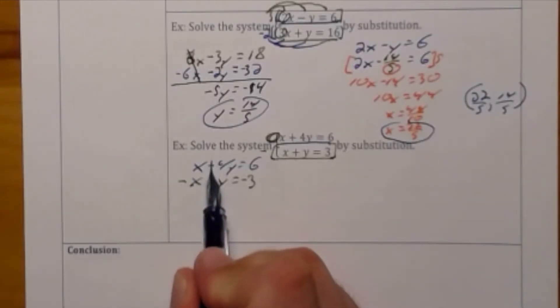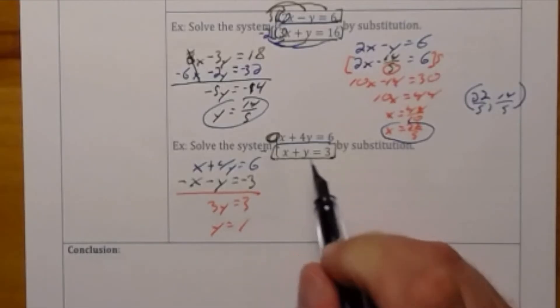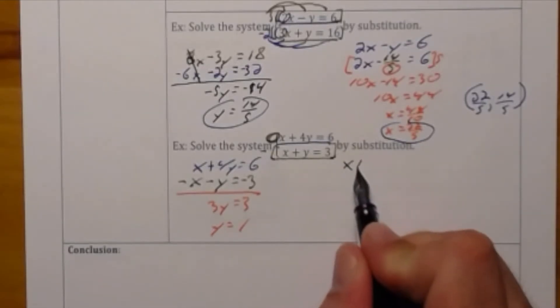My step 4 says I'm going to add both equations together and I'm going to get 3y is equal to 3. Divide both sides by 3 and get y is equal to 1.